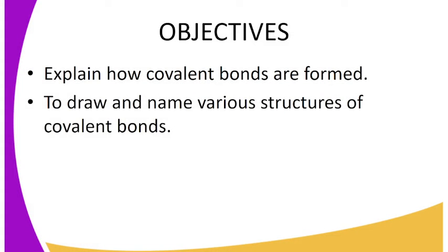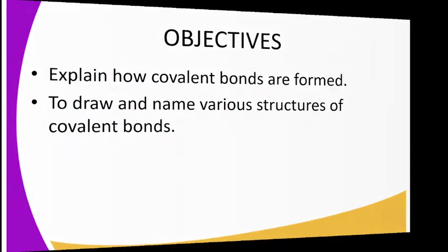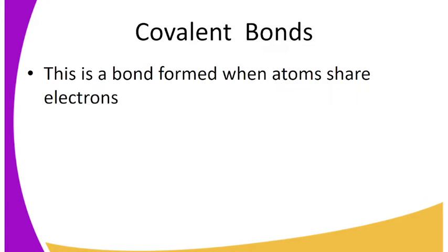The objectives of this lesson are to explain how covalent bonds are formed, and number two, to draw and name various structures with covalent bonds. Covalent bonds are bonds formed when atoms share electrons.